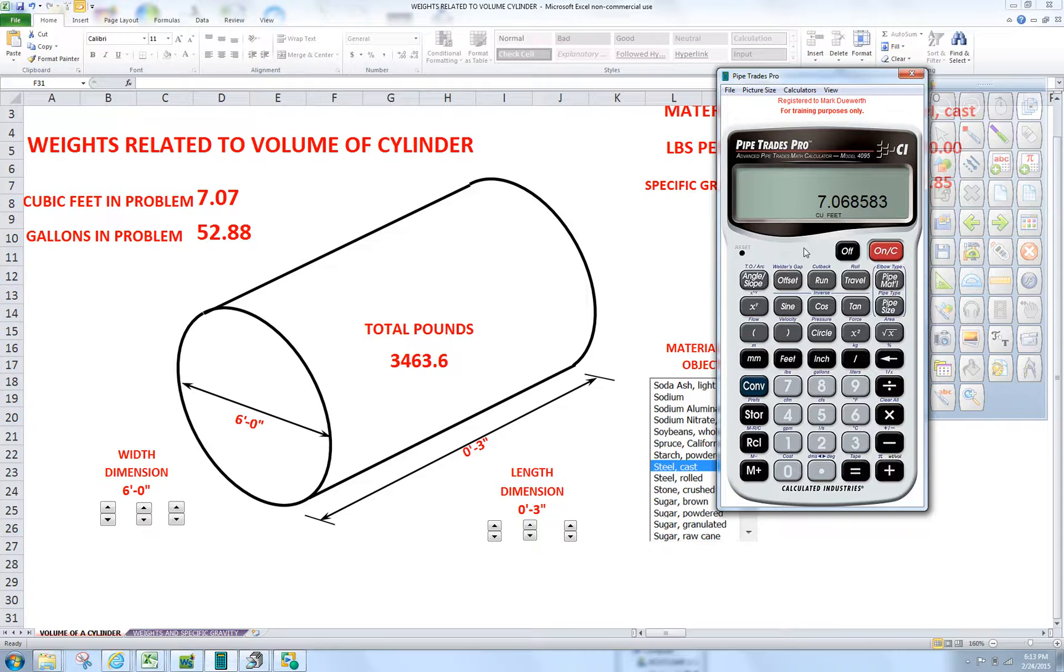So to extract the weight, above the seven key is a pounds key, so we can go convert seven, and there you go.